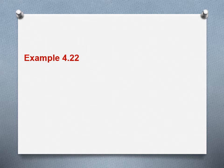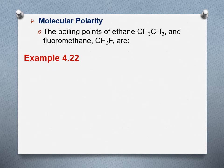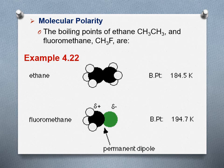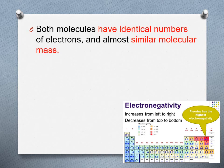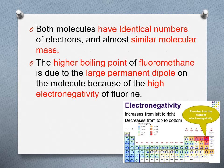Another factor affecting the physical properties of compounds is molecular polarity. Comparing fluoromethane, which is polar, against ethane, which is non-polar: ethane has Van der Waals forces, while fluoromethane has dipole-dipole forces. Because of the polarity of fluorine, fluoromethane has a higher boiling point of 194.7 K. Even though both compounds have identical numbers of electrons and therefore almost similar molecular mass, fluoromethane has a higher boiling point due to the large permanent dipole caused by the high electronegativity of fluorine.